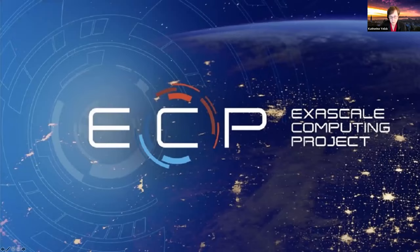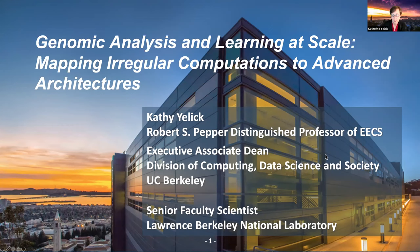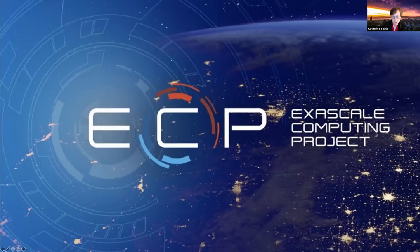In this picture I have the Lawrence Berkeley Lab Computing Sciences building in the front, and below you can see the Berkeley campus, because this work is largely done at the lab but involves many of us going back and forth between the two. The Exascale Computing Project has over 20 application projects, and this is one of them looking at microbial data analysis problems.